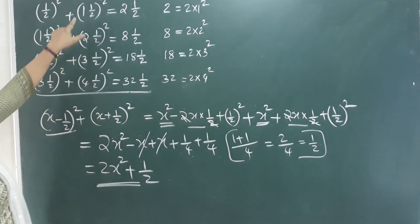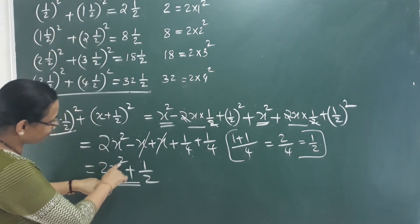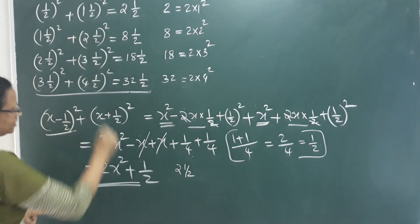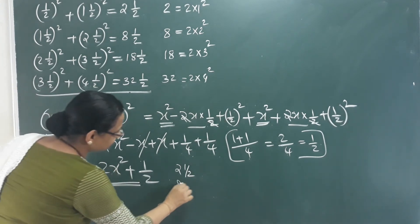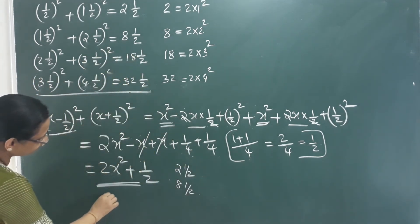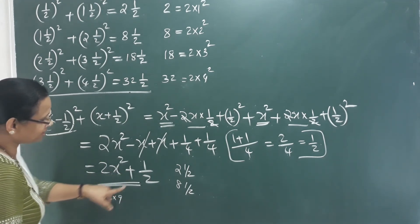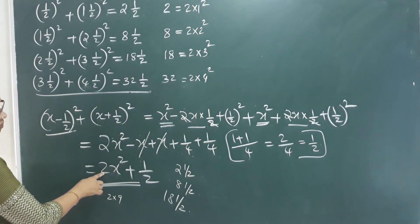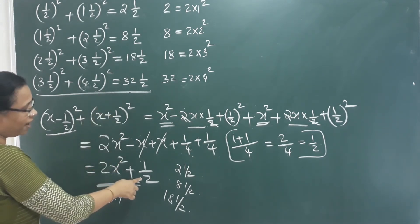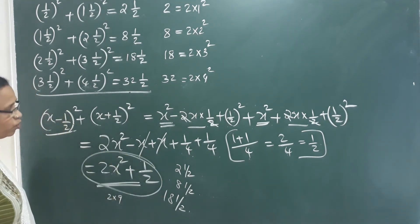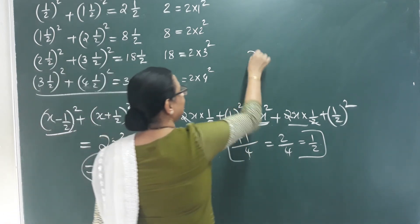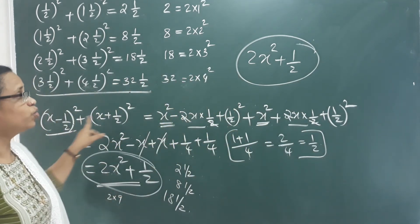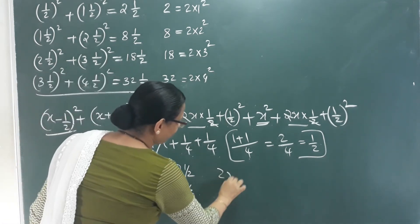Let's verify: when x is 1, we get 2 into 1 square plus half, equals 2 and a half. When x is 2, 2 into 4 plus half equals 8 and a half. When x is 3, 2 into 9 plus half equals 18 and a half. When x is 4, 2 into 16 plus half equals 32 and a half. Algebraically, we prove this pattern. The formula is 2x square plus half.